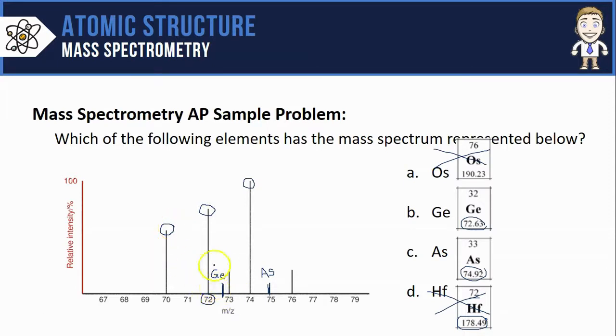Germanium's average atomic mass is right in the middle of all of them. Arsenic is way too high and wouldn't make sense for these three isotope masses that are most abundant. So I can rule out arsenic as a possible answer, and I'm left with B, germanium. This is the mass spectrum for GE.